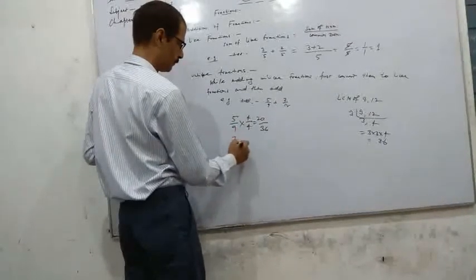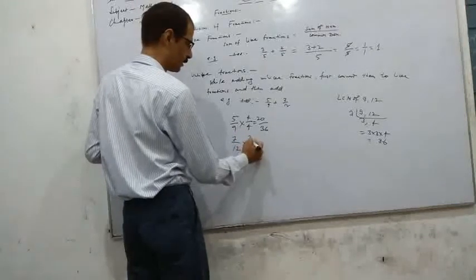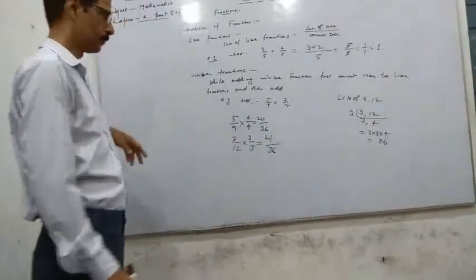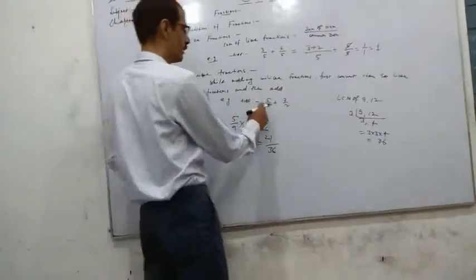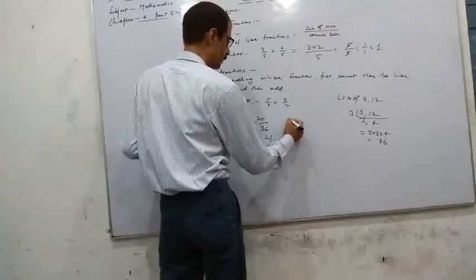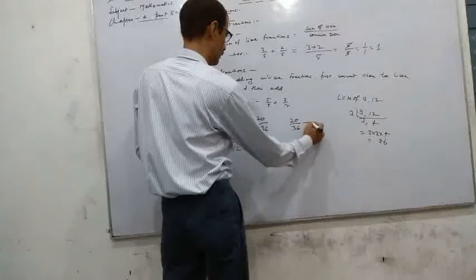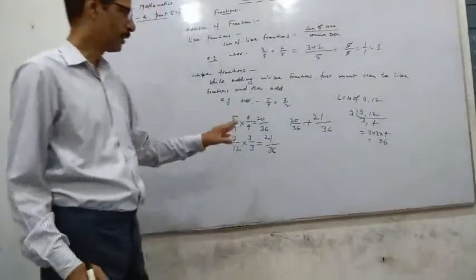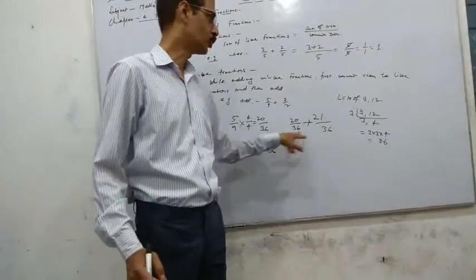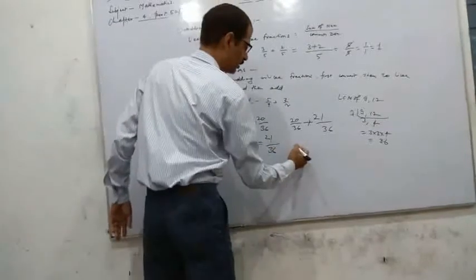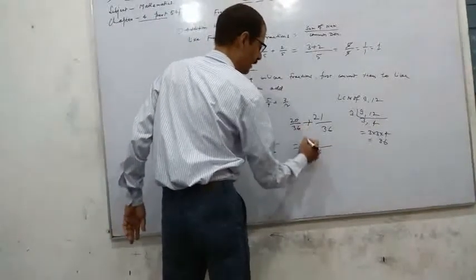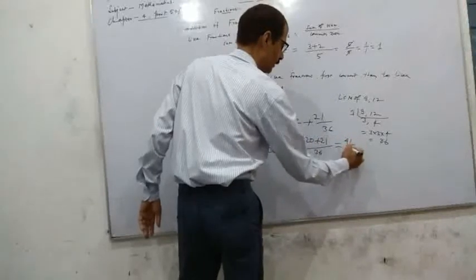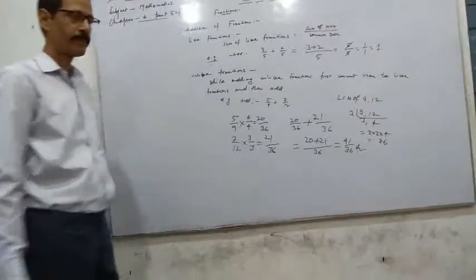Multiply both numerator and denominator by appropriate numbers to make denominator 36. So now this is the form of like fractions. We can write 5 by 9 as 20 by 36 plus 7 by 12 as 21 by 36. Here denominators are same, that means common denominator. According to this rule, sum equals 36 and add numerator 20 plus 21, it becomes 41 by 36.